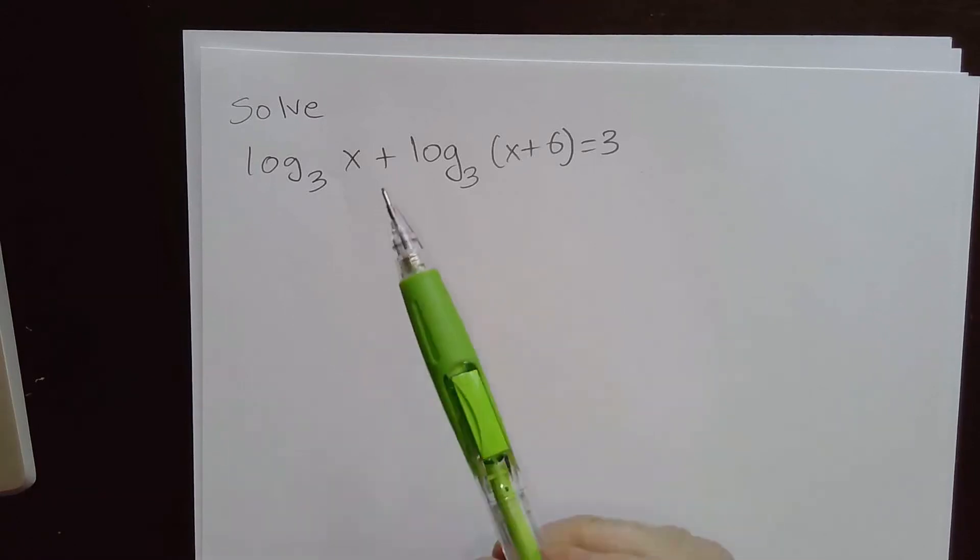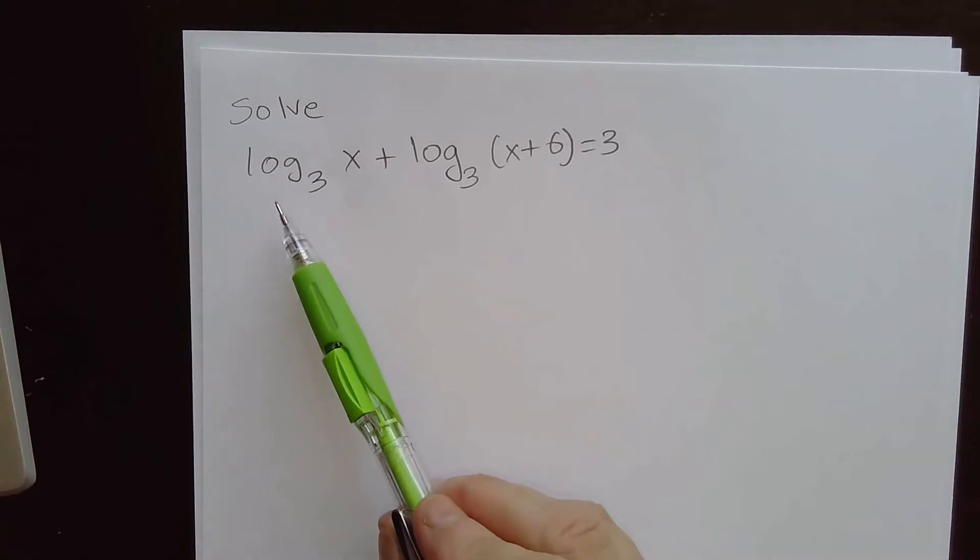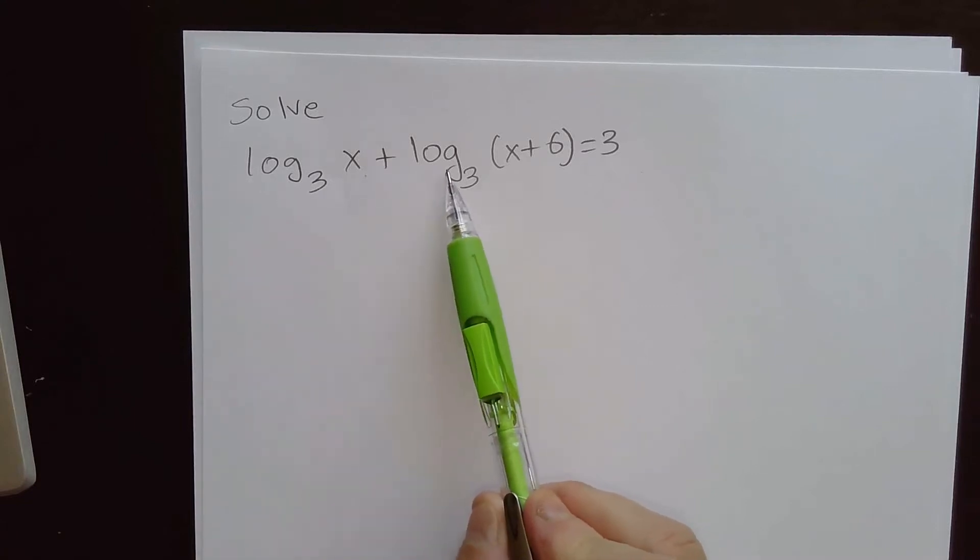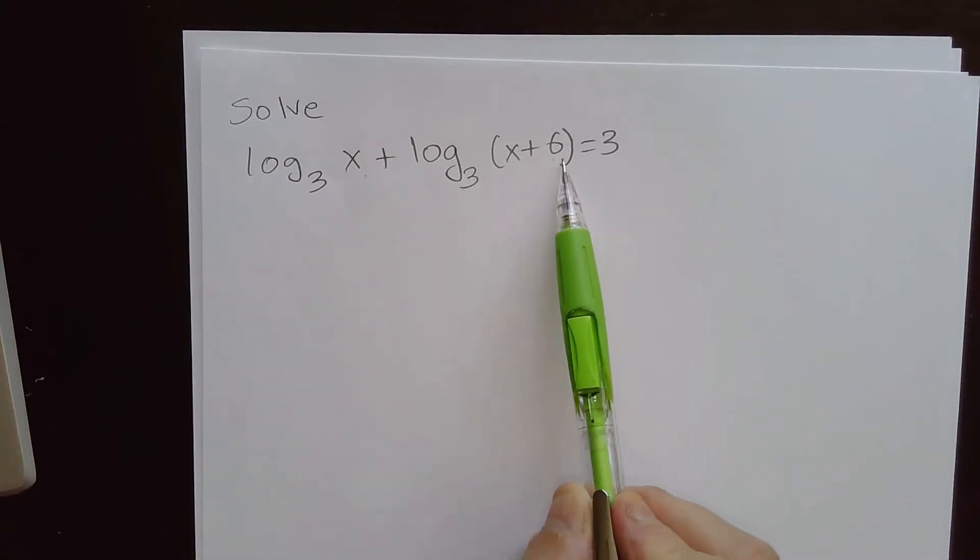Hello everybody. Today we're going to solve this logarithmic equation. We have log base 3x plus log base 3 of x plus 6 equal to 3.